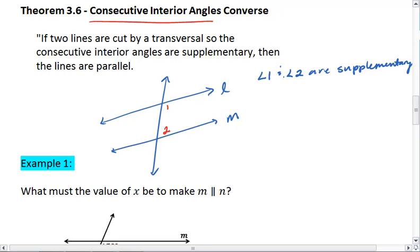so for example, let's say angle 2 is 80 degrees and angle 1 is 100 degrees, then the lines are parallel.